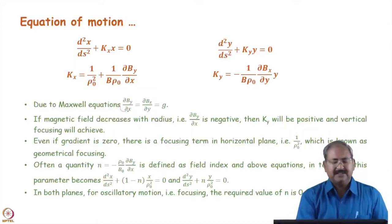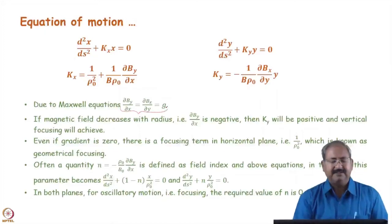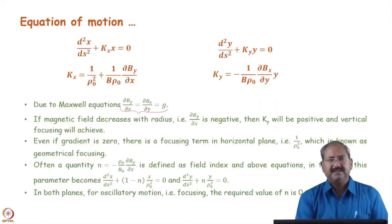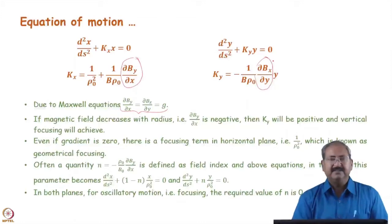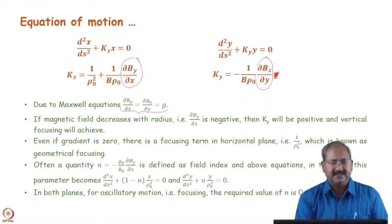Now we can see certain features of this equation of motion. First, applying Maxwell's curl equation in the magnetic field gives ∂By/∂x − ∂Bx/∂y = 0. Since Bs = 0, that component is absent. This means ∂By/∂x = ∂Bx/∂y, so the gradient in the horizontal plane will always be equal to the gradient in the vertical plane — this is the requirement that satisfies Maxwell's equations.